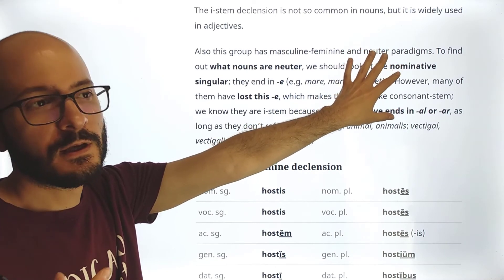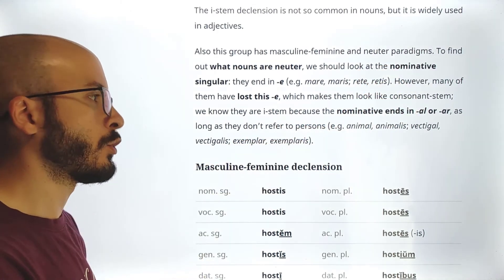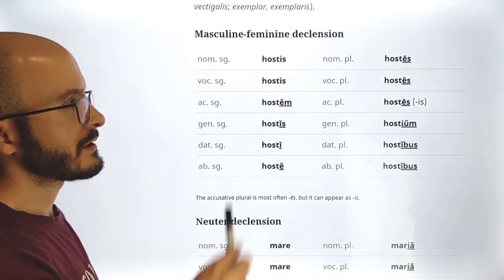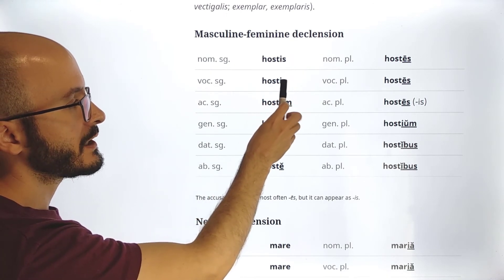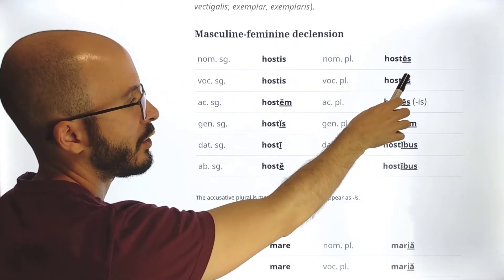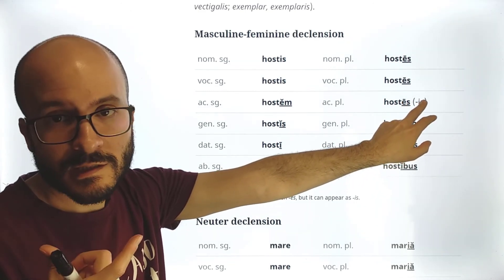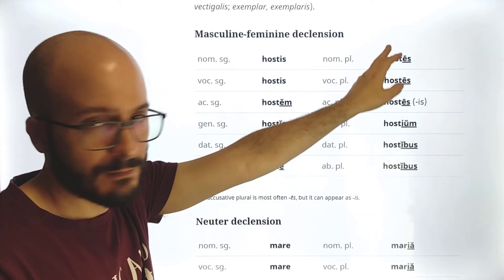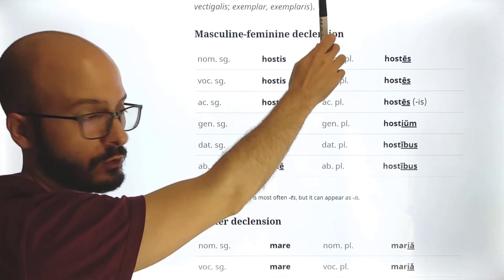Masculine-feminine e-stem declension. We have 'hostis, hostis' — the enemy, from which we get 'hostility,' 'hostile,' etc. The declension goes: hostis / hostis / hostem / hostis / hosti / hoste — singular. Then in the plural: hostes / hostes / hostes — nominative, vocative, and accusative are the same. The genitive plural is 'hostium' — note the extra 'i' that wasn't there in the consonant stem. Then 'hostibus, hostibus.'